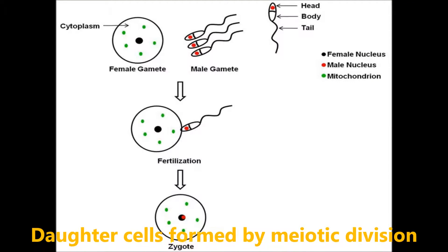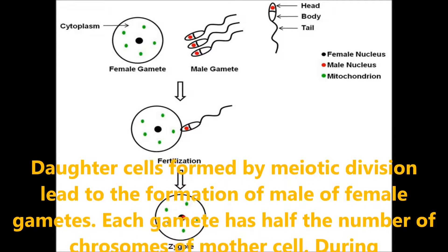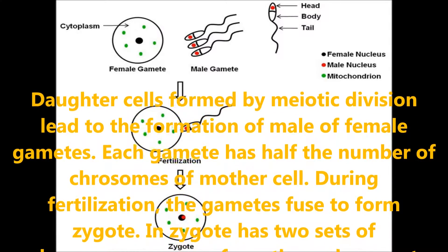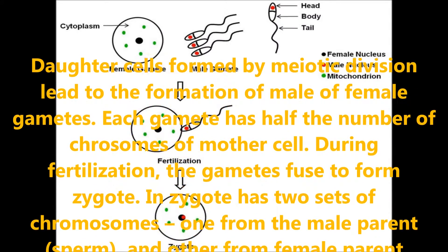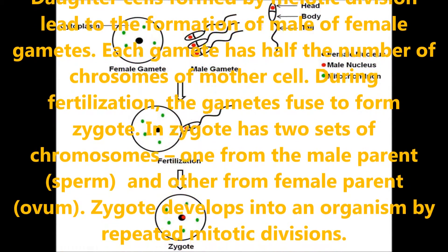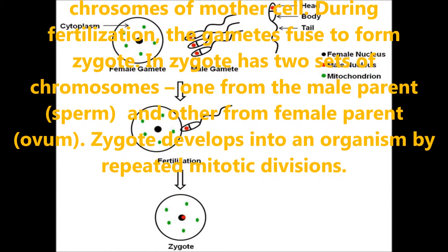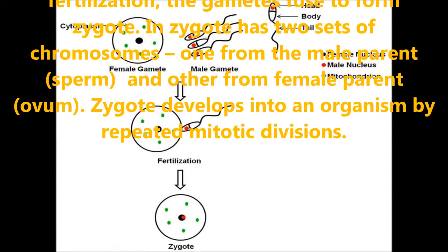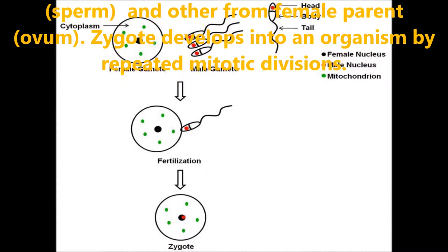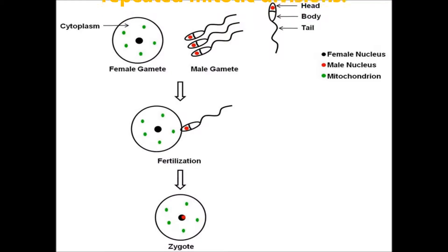Daughter cells formed by meiotic division lead to the formation of male and female gametes. Each gamete has half the number of chromosomes of the mother cell. During fertilization, the gametes fuse to form a zygote. The zygote has two sets of chromosomes — one from the male parent called sperm and other from the female parent called ovum. The zygote develops into an organism by repeated mitotic divisions.